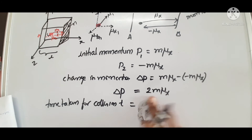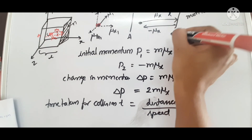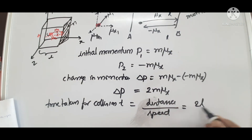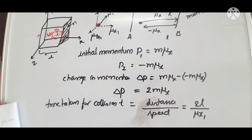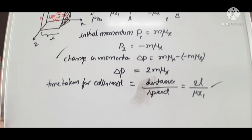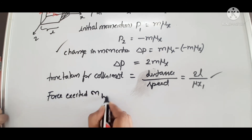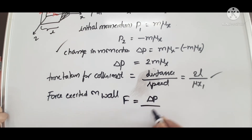Time taken for each collision: T equals 2L divided by mu x1. This is because time equals distance traveled divided by speed. The distance here is 2L, and the speed is mu x1. This is delta T. The force exerted on the wall F equals delta P by delta T.